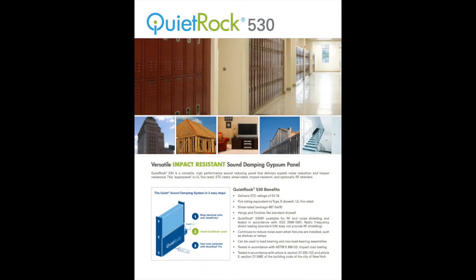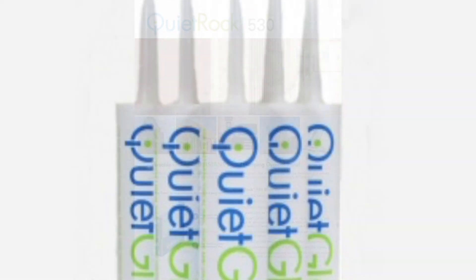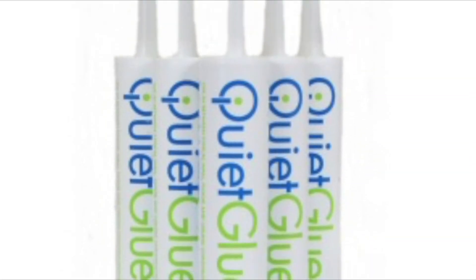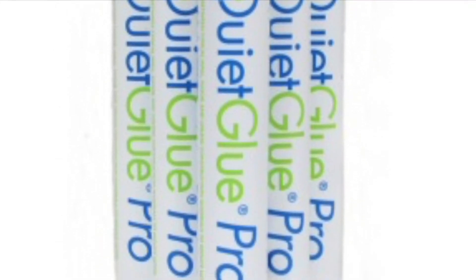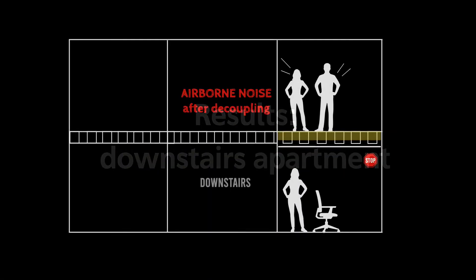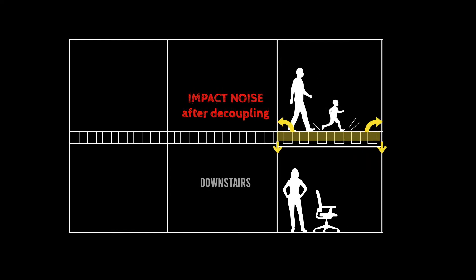Attach the drywall — that should be a sound-dampened drywall like QuietRock 530 — then use acoustical caulk around the edges. As for the results: the downstairs apartment doesn't get airborne noise from upstairs anymore. The impact noise is also significantly reduced because there's no longer a direct connection between the upstairs floor and the downstairs ceiling.